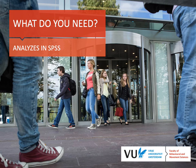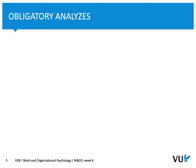Now let's see what kind of analyses you need to perform in SPSS. In Wednesday's workgroup we are going to show you those analyses step by step, but it's important for you to know what to expect. There are a number of obligatory analyses. First, you need to perform factor analysis. Before class you can see a tutorial on Canvas — there is a link to a YouTube video that will instruct you how to perform factor analysis and interpret the coefficients.